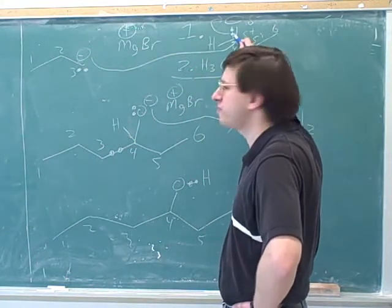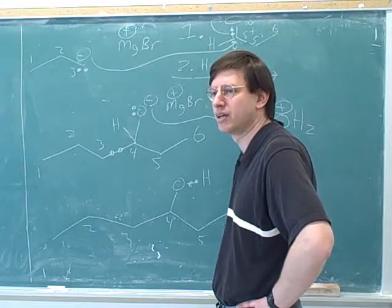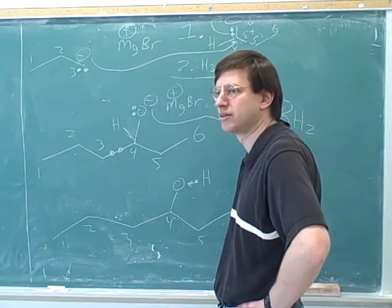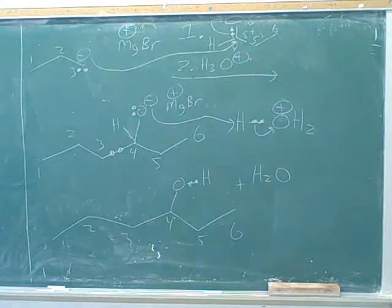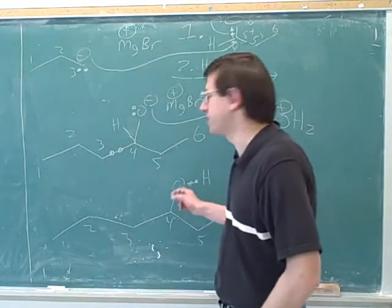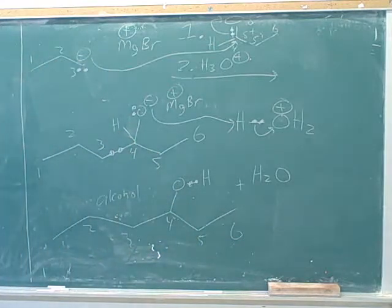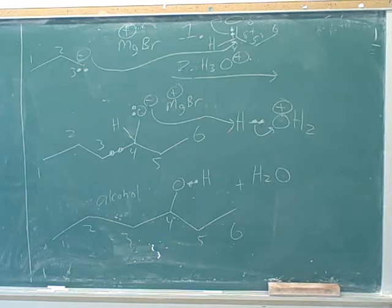Remind me, what type of functional group is this? An aldehyde. And what type of functional group is this? Isn't that just an alcohol? That's an alcohol. We haven't talked about alcohols today, but you've seen them in class. Alcohols are one of the major functional groups on the next exam, so you should definitely make a flash card. An alcohol is a carbon with a hydroxy on it. So we've just learned that a Grignard plus an aldehyde makes an alcohol.